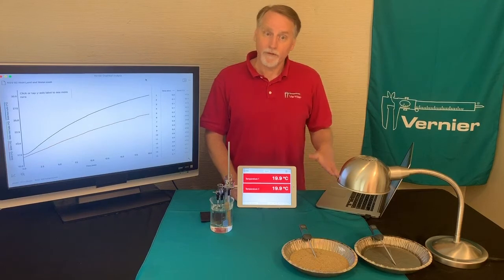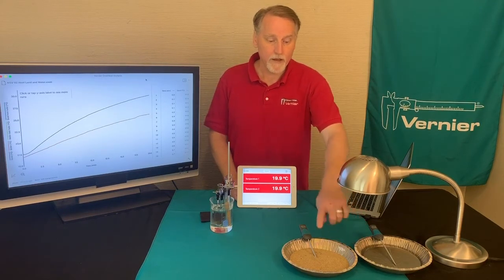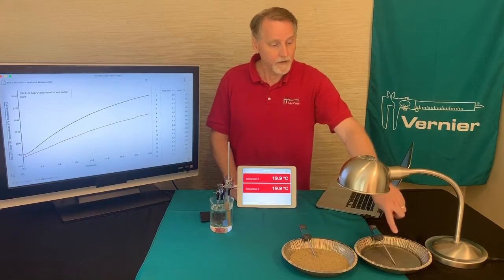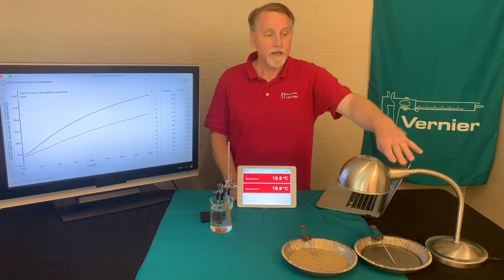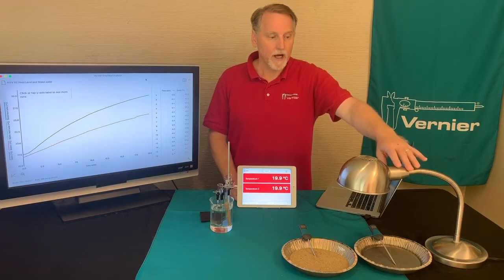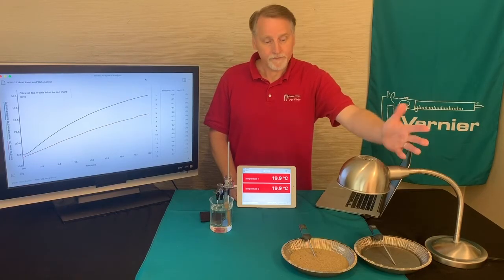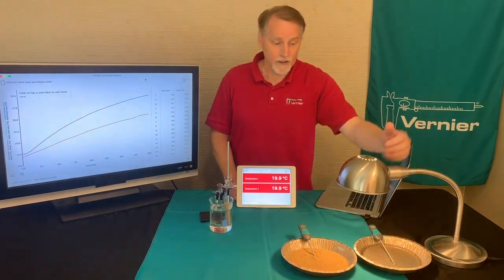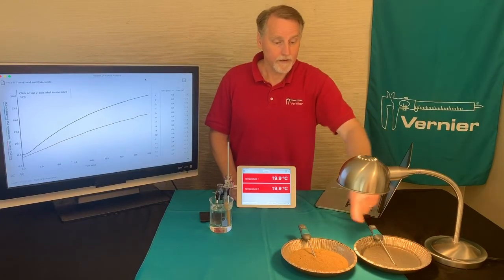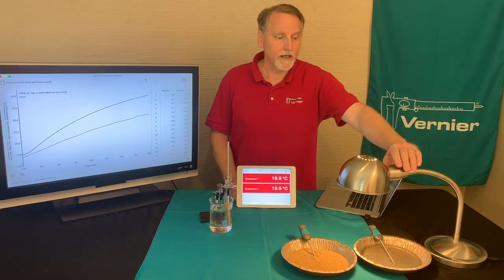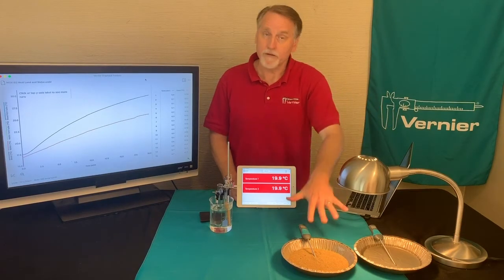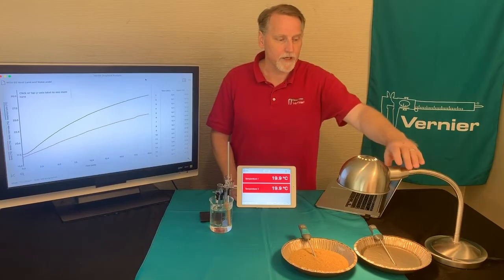We've done it a couple of different ways here. In the pan, we've got a temperature sensor here with some sand. This one has water in it. And here we have a lamp with maybe a 100 watt light bulb or so. We'll end up turning it on, and when it's turned on, the light can heat the water and the sand. We can see what happens to the change in temperature — maybe the different substances cause a different temperature change.